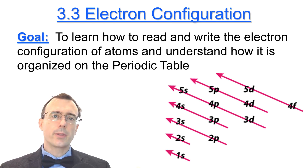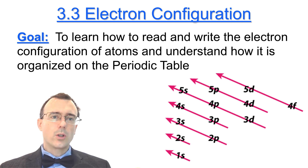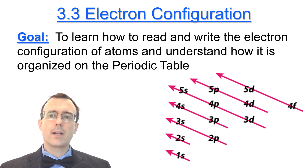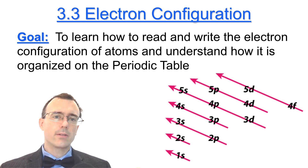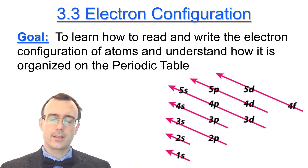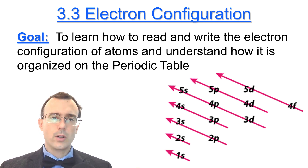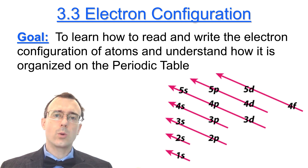This is Lesson 3.3 and today we're going to be talking about electron configuration. Our goal is to learn how to read and write the electron configuration of atoms and to understand how it is organized on the periodic table. Let's go ahead and jump into it and start with a question.